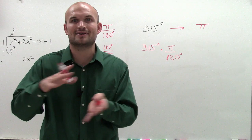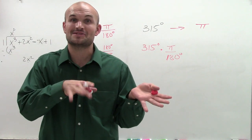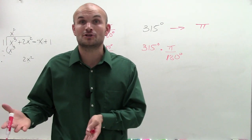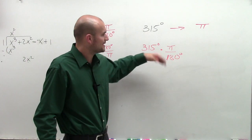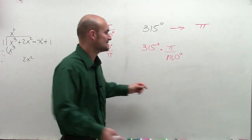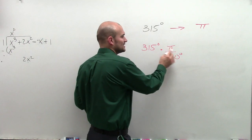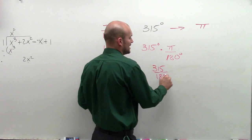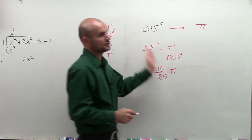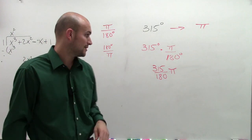especially in science, they cancel out the notation or the degrees. So when I have a degree divided by a degree, I'm going to get rid of my degree symbol, leaving me with a term that's just in pi. So I can rewrite this as 315 divided by 180, times pi, as the degree symbol is canceled out.